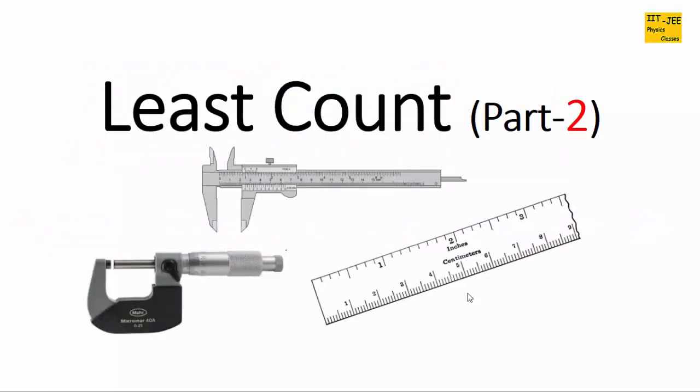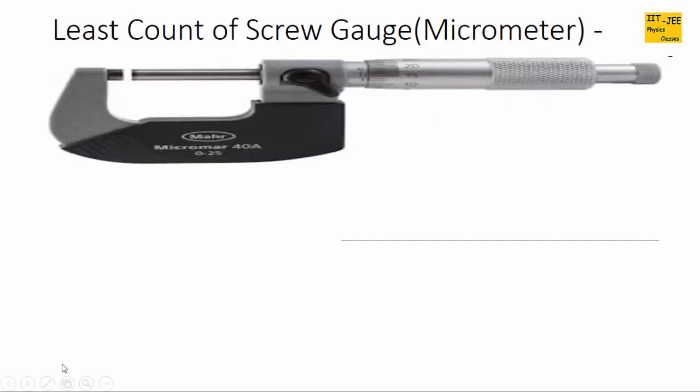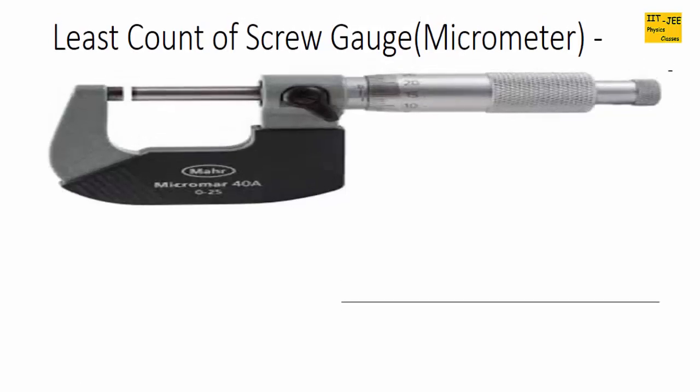In this video we will discuss the least count of screw gauge and solve a problem from IIT JEE 2016. The micrometer screw gauge was first invented by William Gascoyne in the 17th century. It is used to find the diameter of thin wire or very small objects, and it can measure lengths more precisely than vernier calipers.